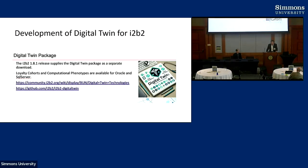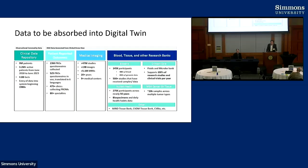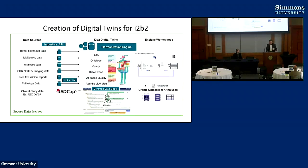Everything evolves and we're really looking to put this digital twin chip into every machine running I2B2, from a philosophical point of view. The problem is that there are a lot of different kinds of data to be absorbed into the digital twin. At MGB alone, we have genomic data, lots of specialized data sets, blood and tissue and research banks. Many of these need to be integrated into an interoperable digital twin model for every patient — a difficult task.